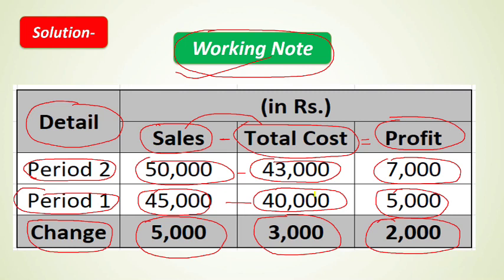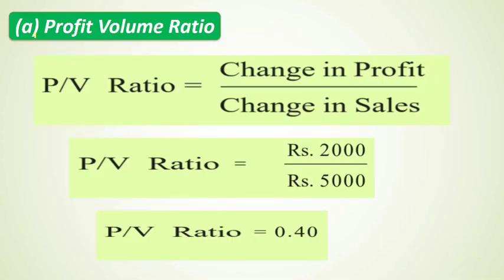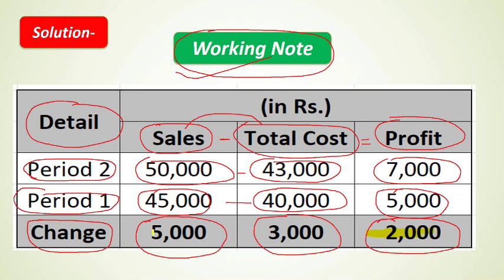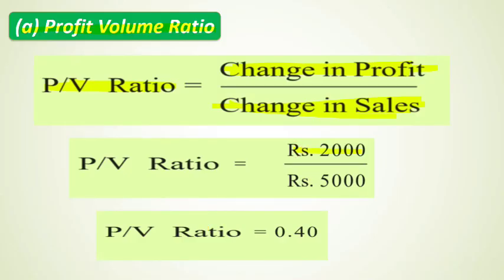Now for Part A — Profit Volume Ratio. The formula is: Change in Profit divided by Change in Sales. Change in profit is ₹2,000 and change in sales is ₹5,000. So the Profit Volume Ratio = 2,000 / 5,000 = 0.40, or 40%.